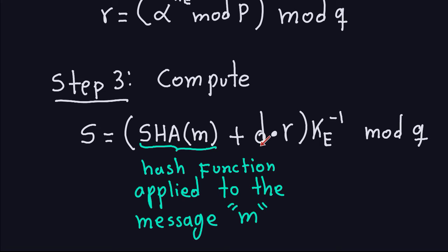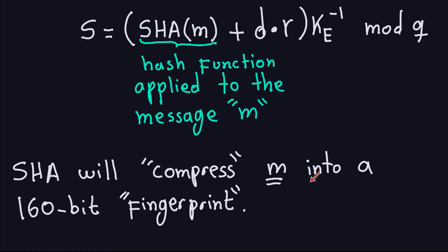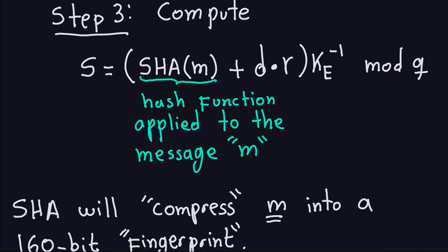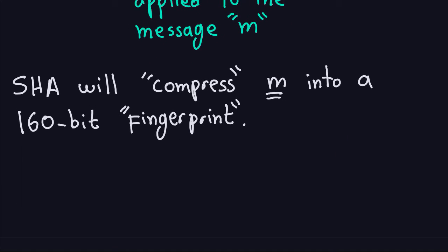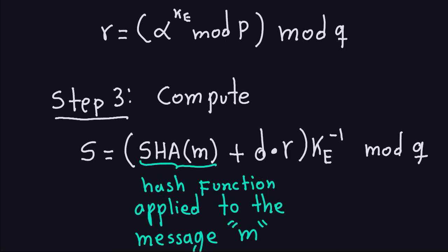We compute S as: the hash of M, plus the private key D times R from the previous step, then multiplied by the inverse of the ephemeral key — all modulo Q. This inverse always exists because Q is a prime number, so the GCD between the ephemeral key and Q will be one. The resulting pair of numbers R and S is the signature for the given message M.